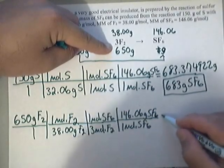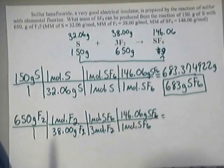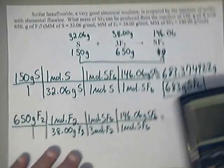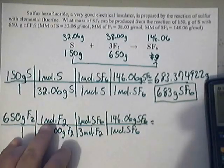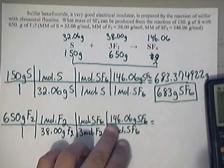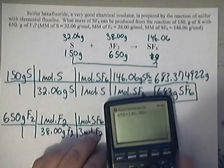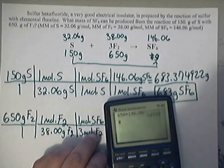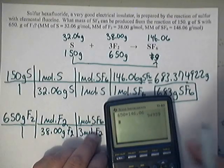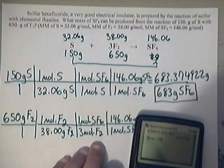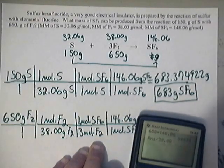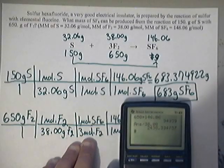And one mole of SF6. There are 146.06 grams of SF6. Now once again we punch this one into the handy dandy calculator. Hopefully we don't make any mistakes on that. That's 650 times 1 times 1 times 146.06. And that's what I've got entered in. Press enter. I get like 94,939. Then I'm going to divide that by 38.00 that I have and the other denominator which is a 3.